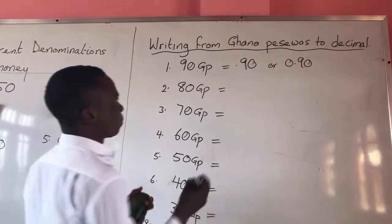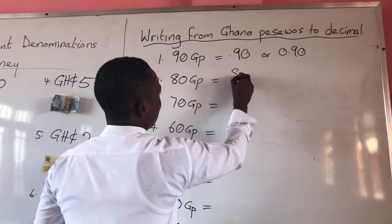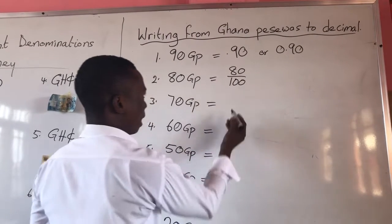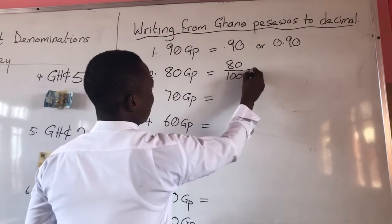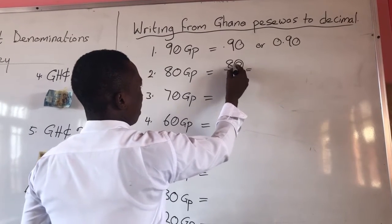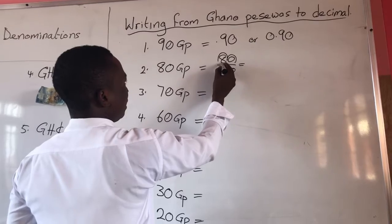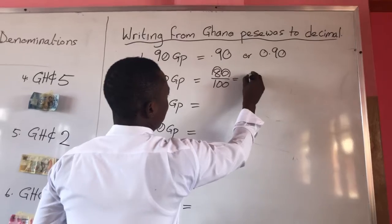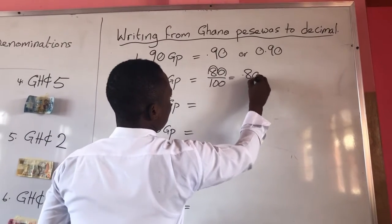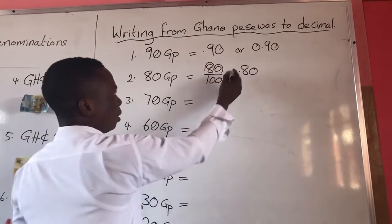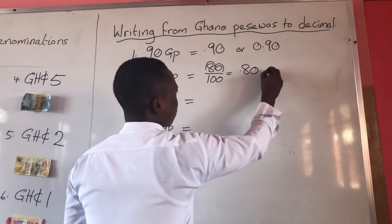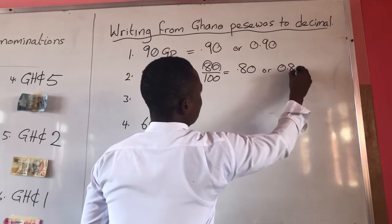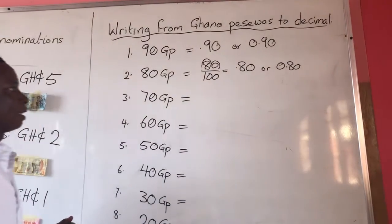The second one - this is 80 over 100. How many zeros? 1, 2. You stand here, move 1, 2 places, and write point 80, which is 0.80. That is in decimal.